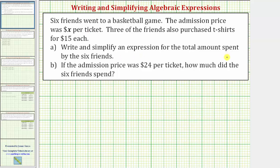The six friends spent money on six tickets and then also three T-shirts. Therefore, for part A,